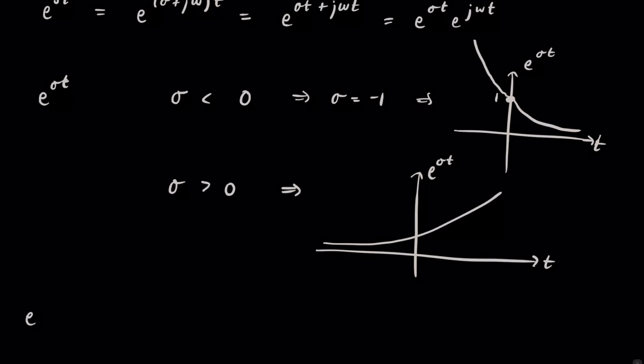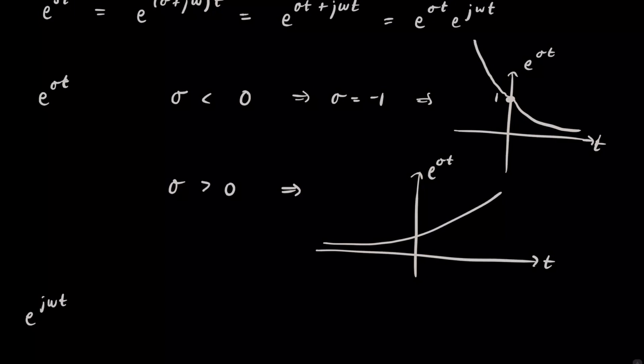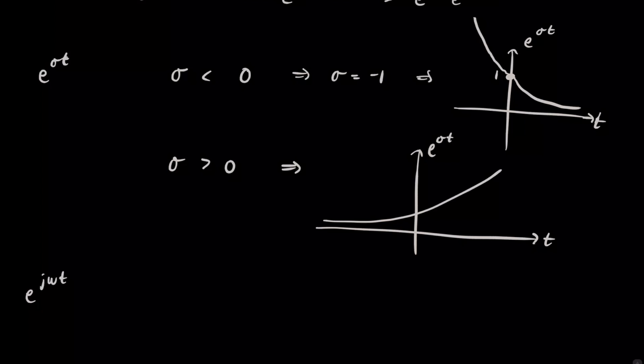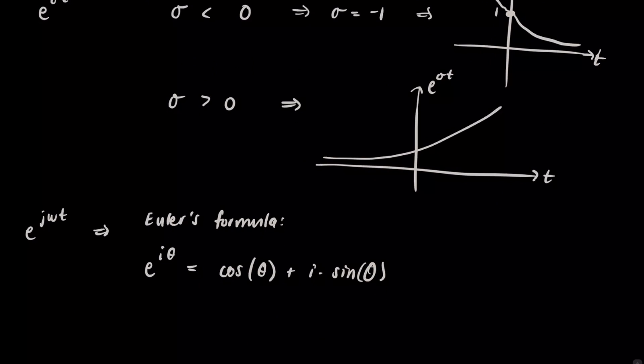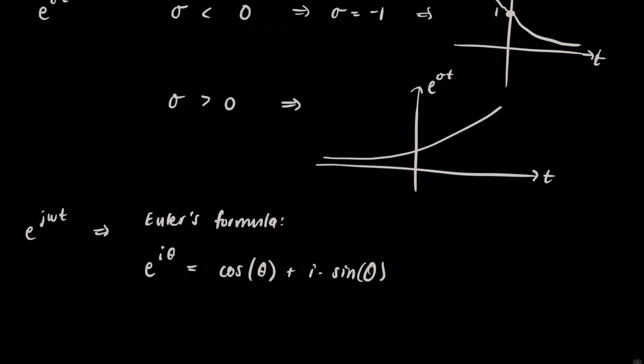Then with e to the j omega t, well, we know that from Euler's formula, which as a reminder is e to the i theta equals cosine theta plus i times sine theta.